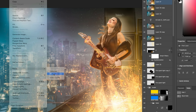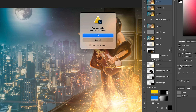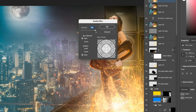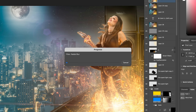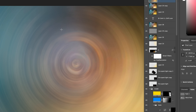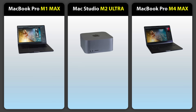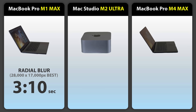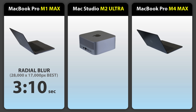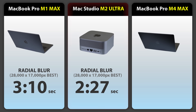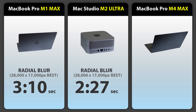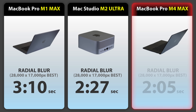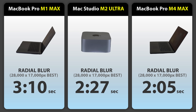To keep things fair with memory, we purge the memory on all three. Then we apply a radial blur to this massive file — spin mode, best quality. If you've ever used this, it's super intensive on the GPU. With the radial blur on this massive file: the M1 MacBook Pro took 3 minutes and 10 seconds, the M2 Studio faster at 2 minutes and 27 seconds, and the M4 MacBook Pro comes in at 2 minutes — still the fastest.